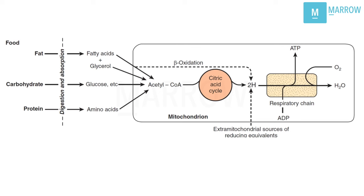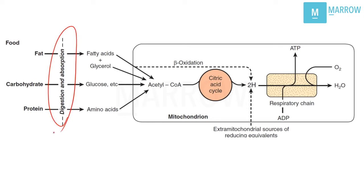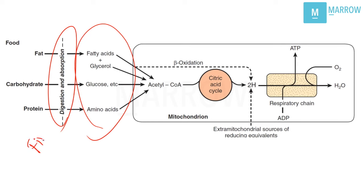Have you ever wondered how the food you eat provides you energy? The food we eat is first digested. That is the first part. Then macromolecules are produced from the food, and electrons are extracted from these macromolecules. This is the first phase. The first phase of metabolism is digestion and absorption.